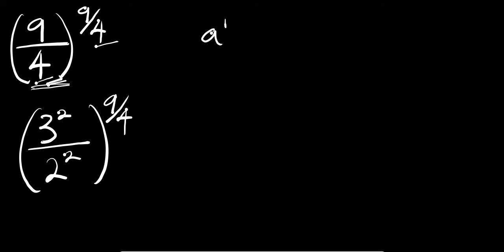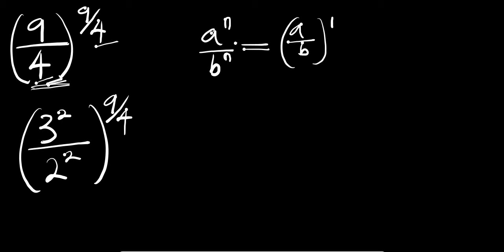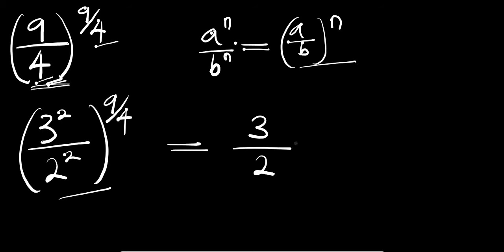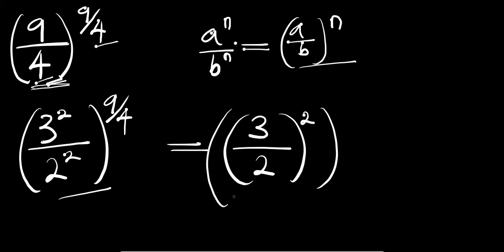Now if you have a to the power of n divided by b to the power of n, this equals a divided by b all to the power of n. So let's apply this identity right here. We are going to have 3 divided by 2, all to the power of 2, and all to the power of 9 divided by 4.